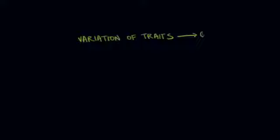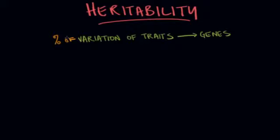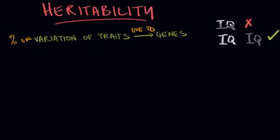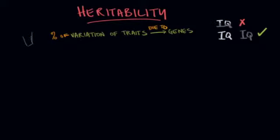Heritability is the proportion of variation among individuals that we can attribute to genes. A textbook might define it as the percentage of variation due to genes. For example, if the heritability of intelligence is 50%, we're not saying intelligence is 50% genetic—we're saying that the differences in intelligence can be 50% attributed to genetic differences. To ask how much of our intelligence is mandated by our genome as opposed to instilled by our environment is completely inappropriate.